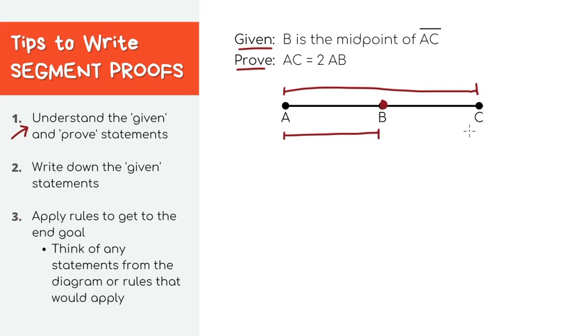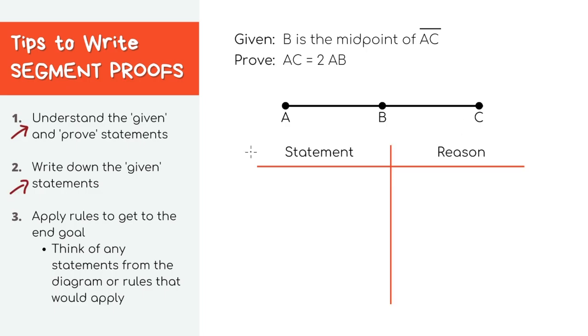Since we now understand the problem, let's actually get started on the proof itself. We'll always have two columns, one for statements, and another one for the reason why that statement is true.